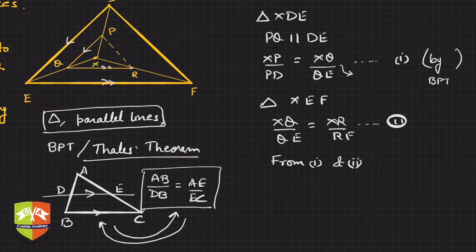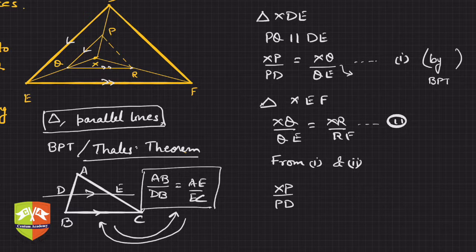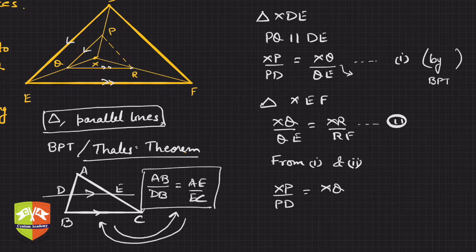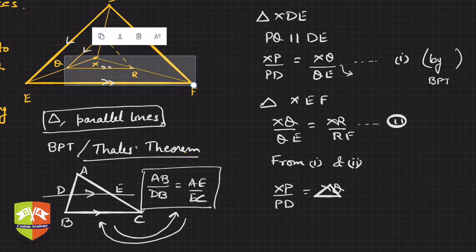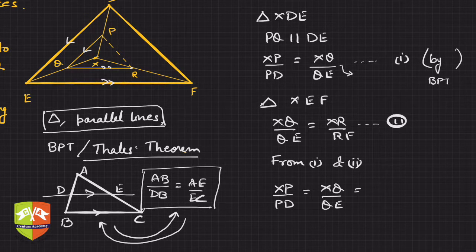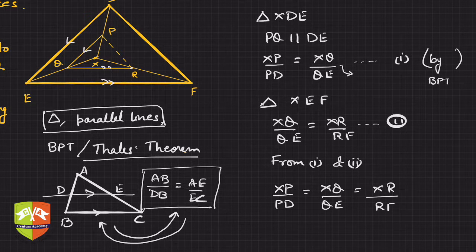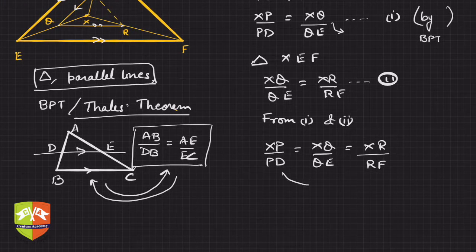We get XP by PD is equal to XQ by QE, and XQ by QE is equal to XR by RF. That means I can equate these two as well.